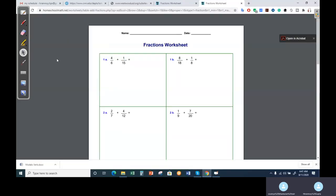This is problem number 4: 4 over 6 and something over 15. You have to make a common denominator. If you have to make a common denominator, you have to check the LCM.